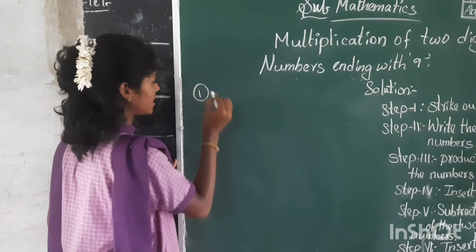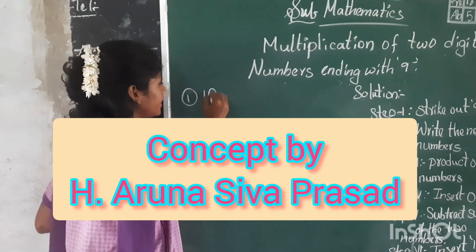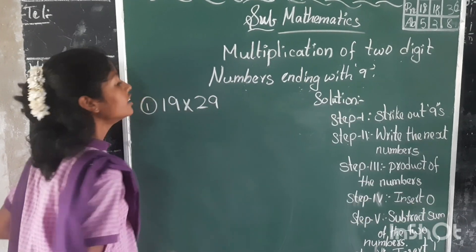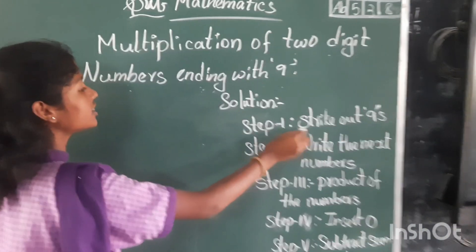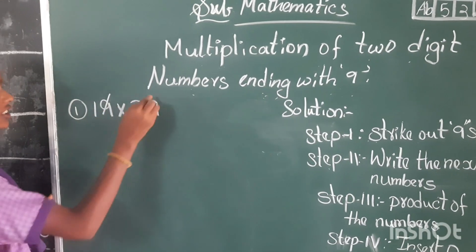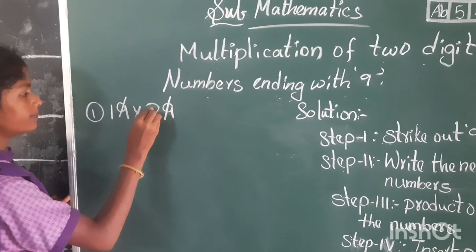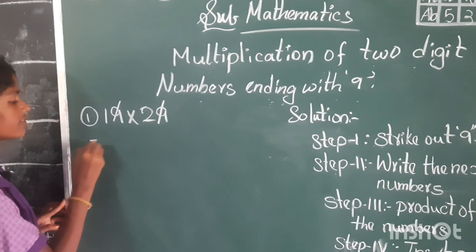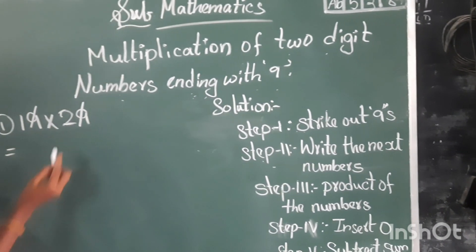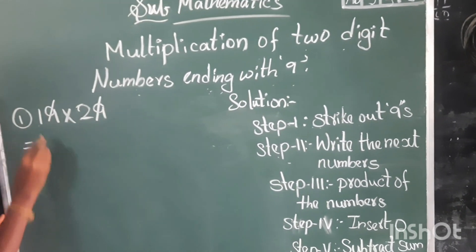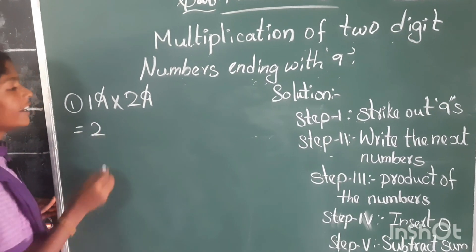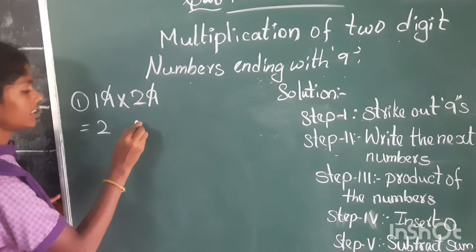The first example is 19 into 29. The first step is we need to strike out the 9s. We need to strike out these two 9s. The second step is we need to write the next numbers of these two numbers. The next number of 1 is 2, and the next number of 2 is 3.